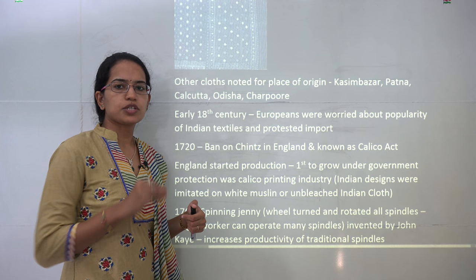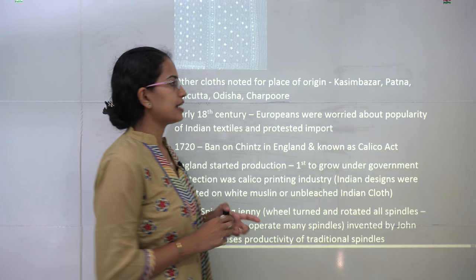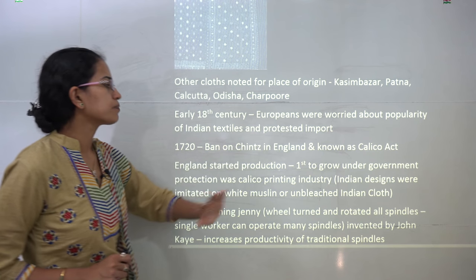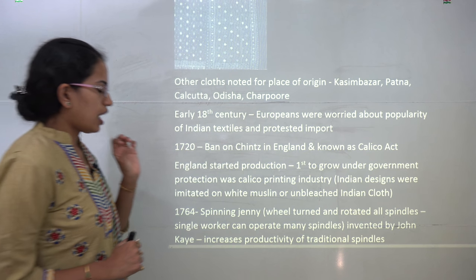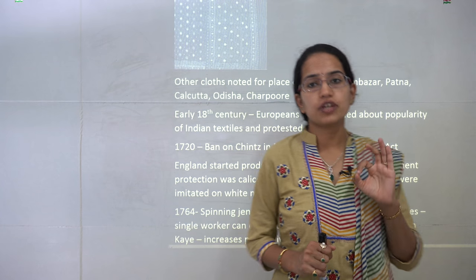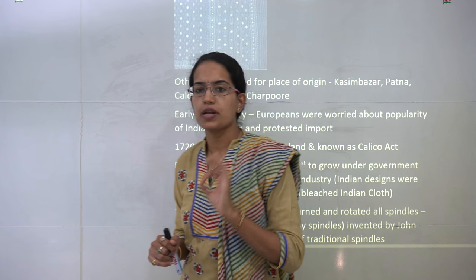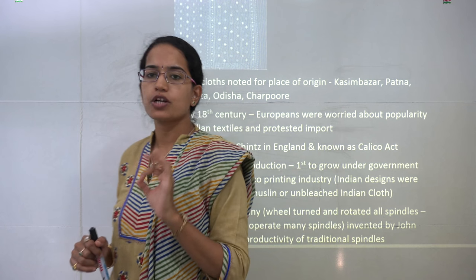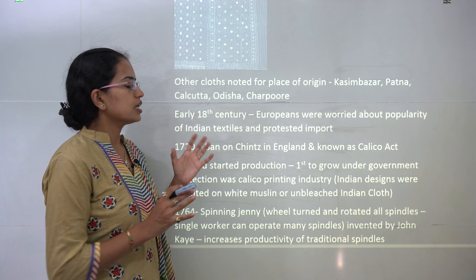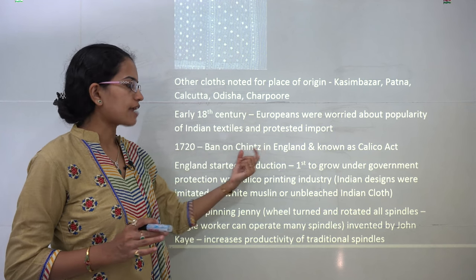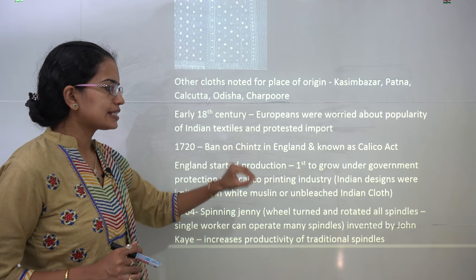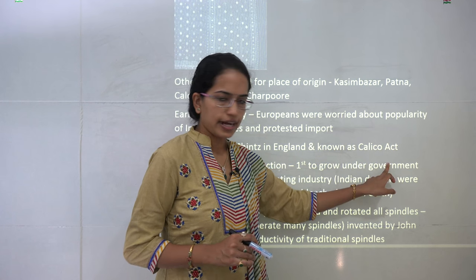Other areas producing textiles were Kasim Bazar, Patna, Calcutta, Odisha and Charpur. During the 18th century, Europeans were very afraid of the popularity of Indian cotton textiles. There was a ban on chintz — the flowery design — in England, and this act was known as the Calico Act. The sole idea was to protect their own workers.